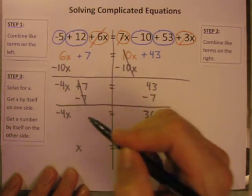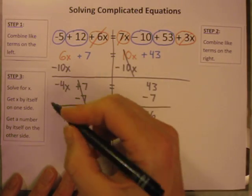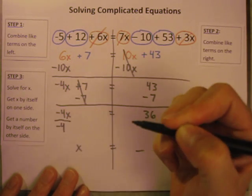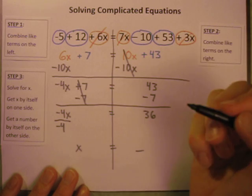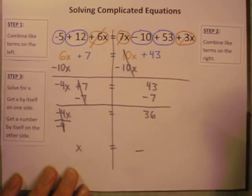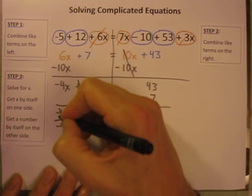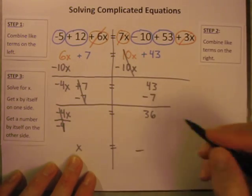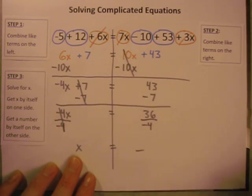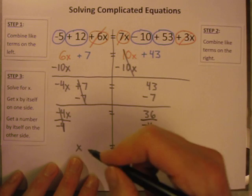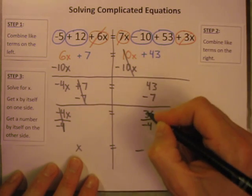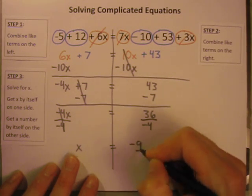Now negative 4 times x equals 36. How do you get rid of times negative 4? By dividing by negative 4. Why divide by negative 4? Well negative 4 divided by negative 4 is a positive 1, leaving just 1x or just x on the left hand side. And if I divide by negative 4 there, I will divide by negative 4 on the right. And I'm ready to get my answer. x is equal to 36 divided by negative 4. A positive divided by a negative is a negative 9.